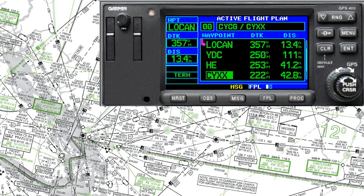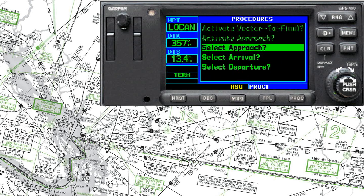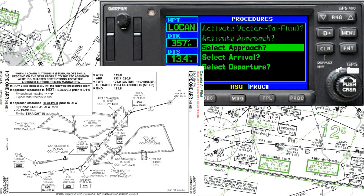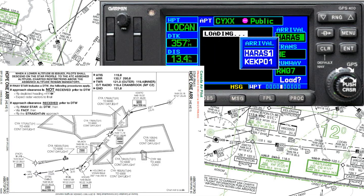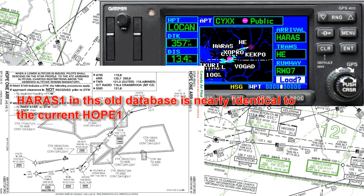What we have now is a basic flight plan from Castlegar to Abbotsford — something you might store in the Garmin's memory as your starting point. To begin, we're going to insert the STAR. We hit the procedure button, select an arrival, and the particular arrival we're going to enter is called the Harris 1 arrival, which is pretty much the same as the current Hope STAR.